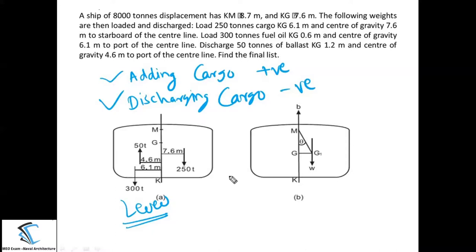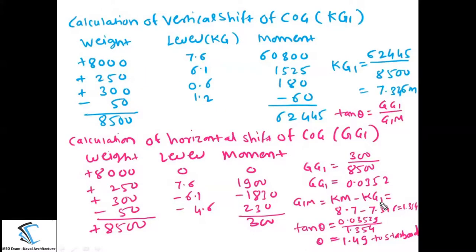These sign conventions are not compulsory — you can use your own, such as negative for starboard and positive for port. It is not a thumb rule; you can use any sign convention consistently. Now let us start the solution. First, calculate the vertical shift of the center of gravity using a table with three columns: weight, lever (KG values), and moment.